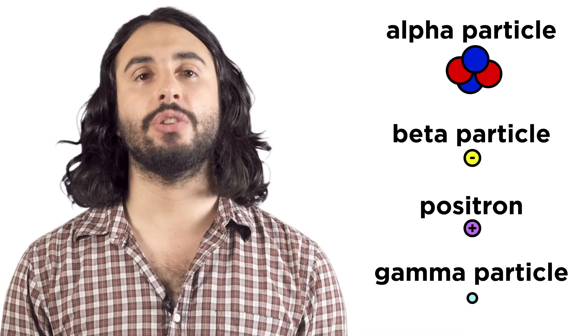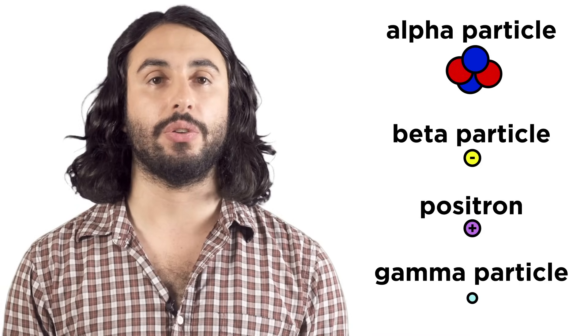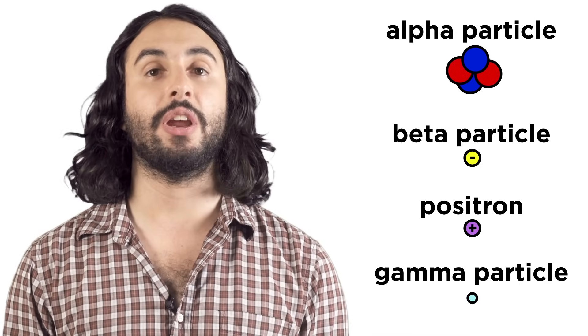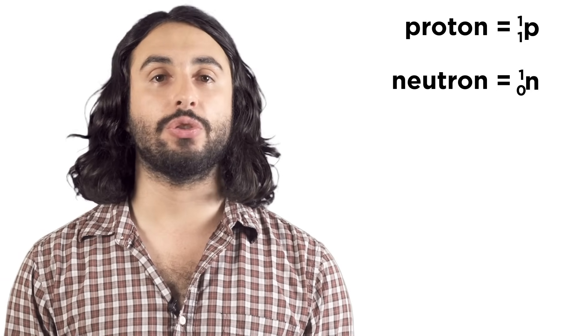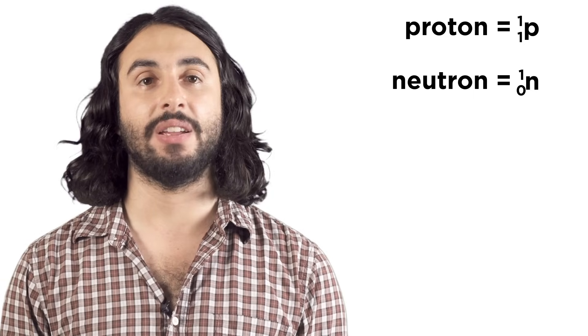Let's quickly learn the ways that we can notate these particles so that we can write nuclear reactions. Remember that when we write nuclide symbols, the lower number is atomic number or number of protons, and the upper number is atomic mass or the protons plus neutrons. So a proton and neutron will be signified this way, with a p and an n, each with mass one, but only the proton has atomic number one.